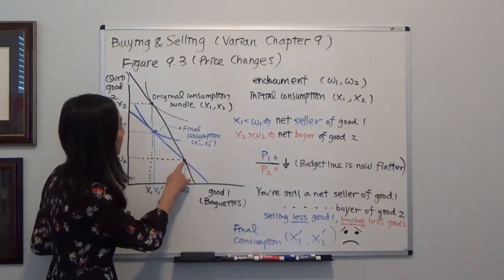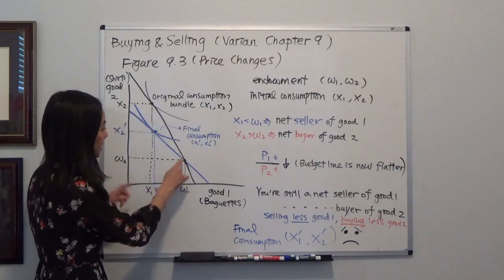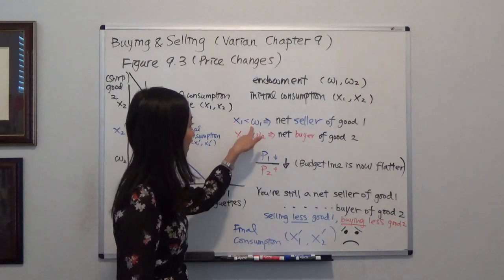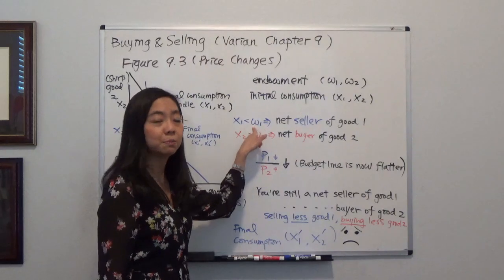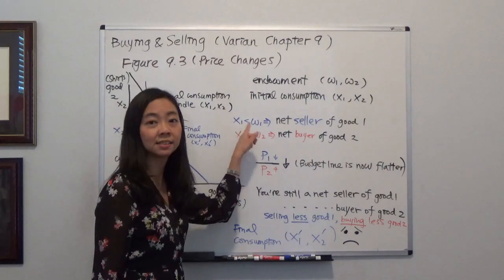So suppose your initial consumption bundle is here. You can see that because your x1 is less than Omega 1, meaning you end up with less baguettes than your endowment.